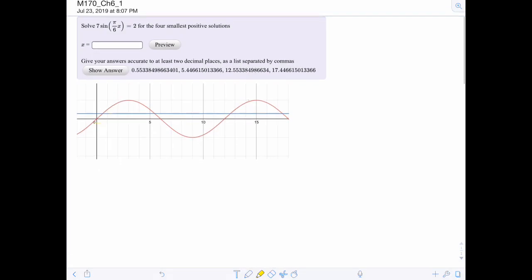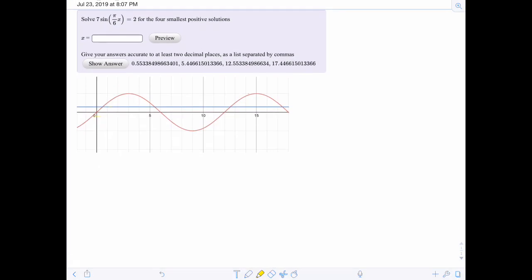In this example, we're going to solve a trigonometric equation such that 7 times sine of pi over 6x plus 2, and then 4, 4 smallest positive solutions.